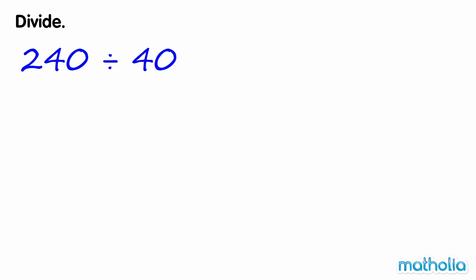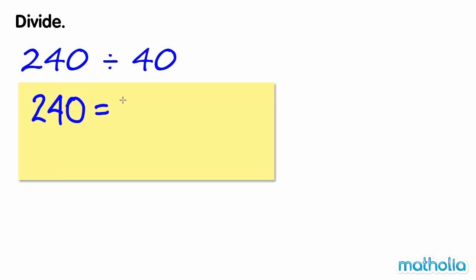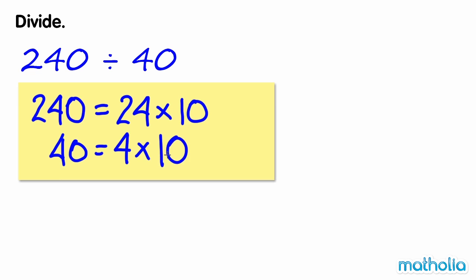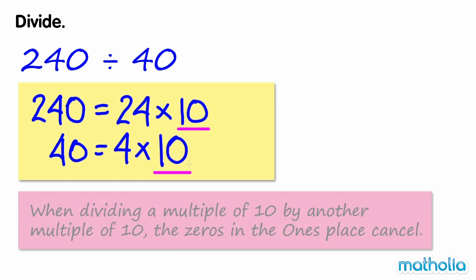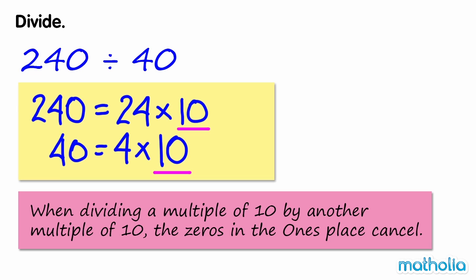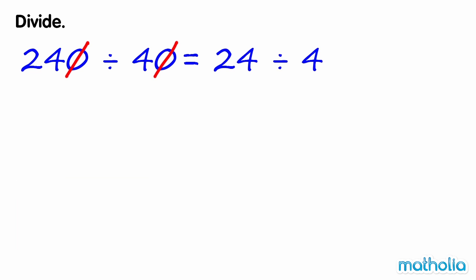Divide. Find 240 divide 40. We can write 240 as 24 times 10, and 40 as 4 times 10. Both 240 and 40 can be expressed as 10 times another number, which means they are both multiples of 10. When dividing a multiple of 10 by another multiple of 10, the zeros in the ones place cancel. So 240 divide 40 is equal to 24 divide 4. 24 divide 4 equals 6, so 240 divide 40 is also equal to 6.